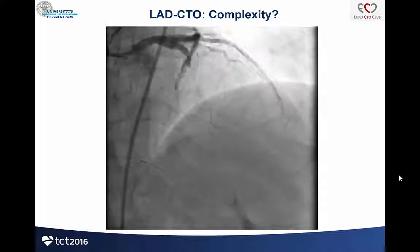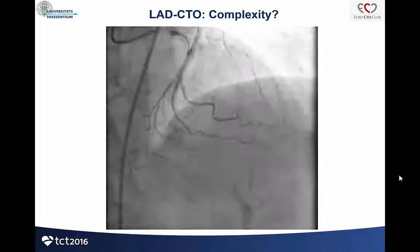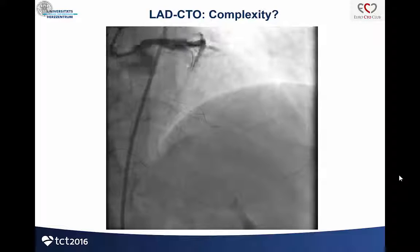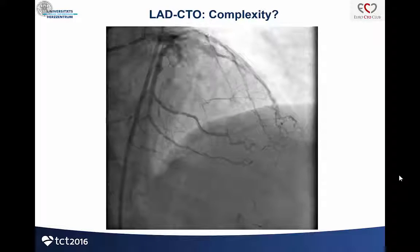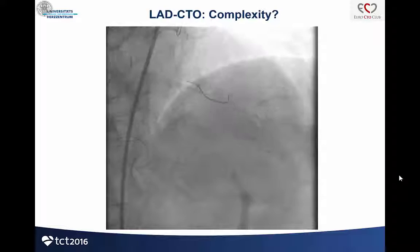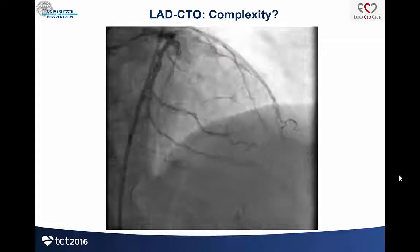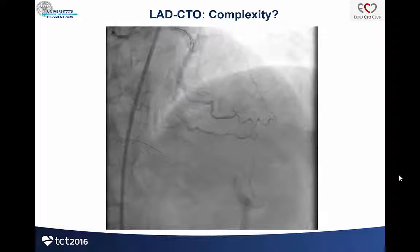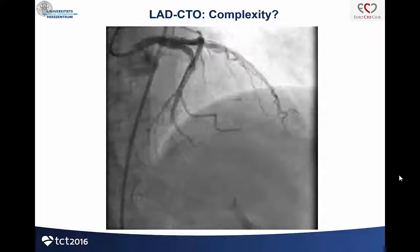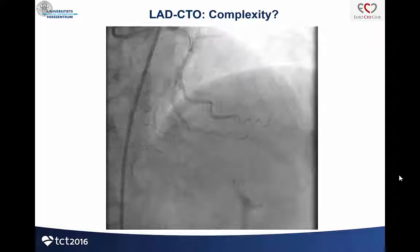So I stopped my retrograde approach from the right coronary artery. As you can see here, the LAD is really a complex CTO. We have a blunt stump, a 30-millimeter calcified lesion, and the landing zone is not very nice.